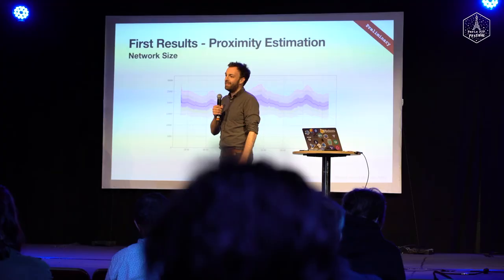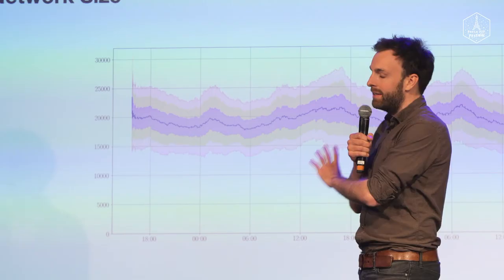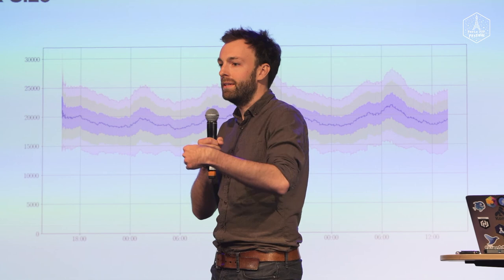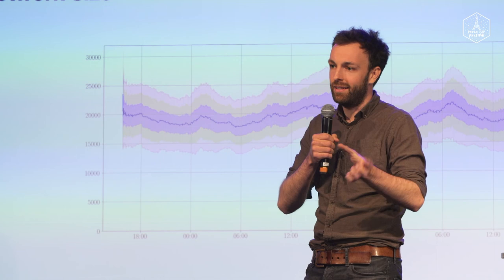Q: Have you tried this estimator algorithm with a smaller number of nodes in the network to see if it holds for smaller networks? A: No, I haven't done this yet, and I'm not sure how to do it — it could probably work if I simulate the network in Testground. How the estimate operates at the limits is one of the next steps. We need to look at how the network size estimate performs when the network grows but also when it shrinks — at what point the estimate gets too far off. Testground would be a nice tool for testing with smaller networks.